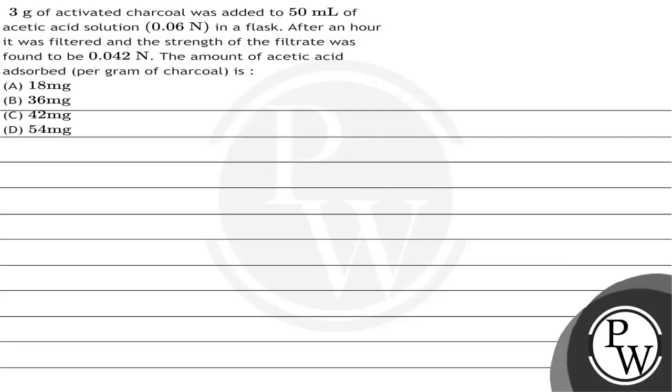Hello Bacho, let's read the question. 3 grams of activated charcoal was added to 50 mL of acetic acid solution which is 0.06 normal in a flask. After an hour, it was filtered and the strength of the filtrate was found to be 0.042 normal. The amount of acetic acid absorbed per gram of charcoal is.